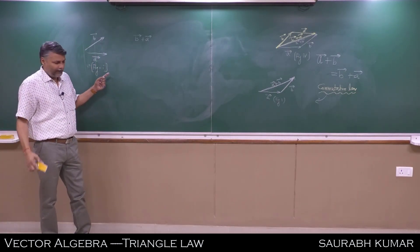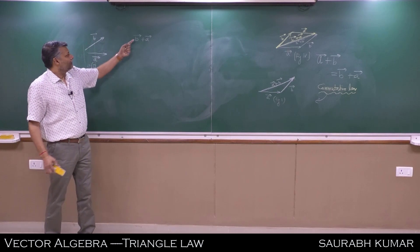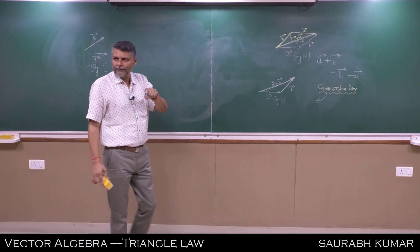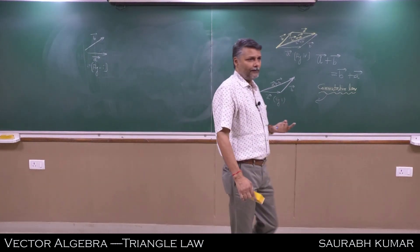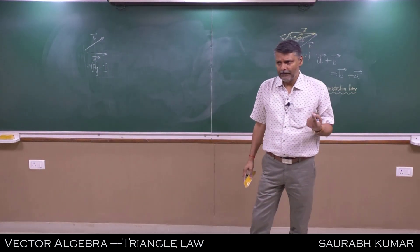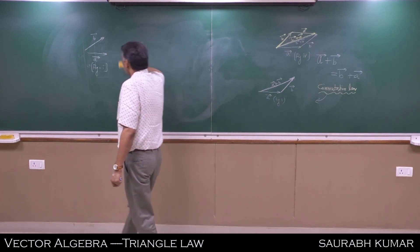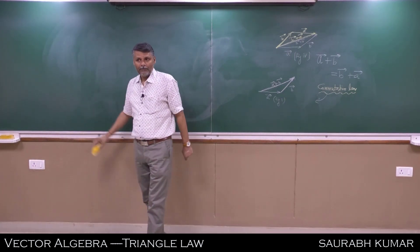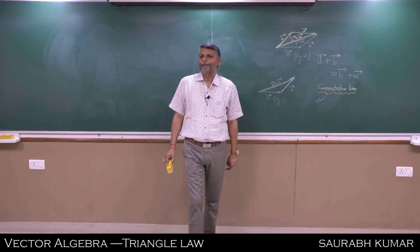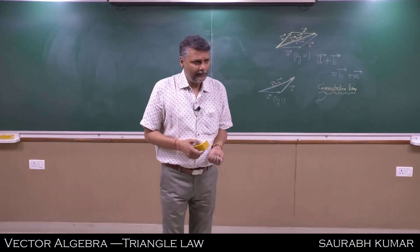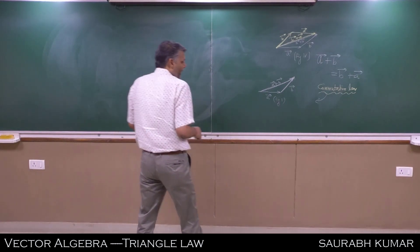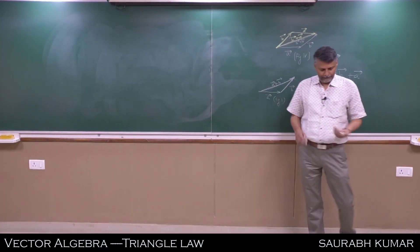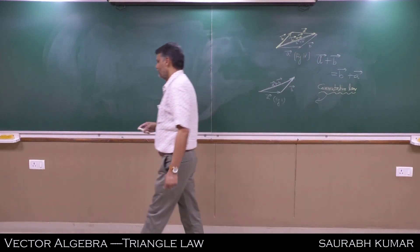Suppose you are to find A plus B. It is not necessary to take A as the first vector; you can take B as the first vector also - you can take any one as the first vector. Now, what do we write in B of the graphical method? B is the parallelogram law, also known as the parallelogram law.